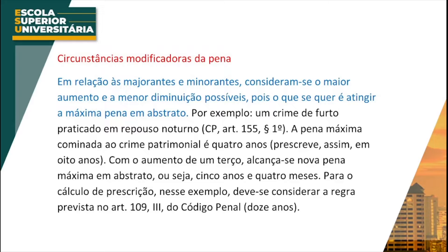No caso de uma causa de diminuição da pena, nós temos que fazer uso da menor causa possível. O raciocínio é o seguinte: sempre que houver uma causa de aumento de pena, nós temos que aumentar ao máximo a pena — no caso seria a pena máxima — então a gente pega a pena máxima, aumenta ao máximo, e é esse valor que vai ser utilizado para o cálculo da prescrição.